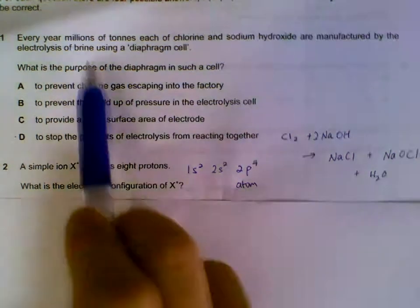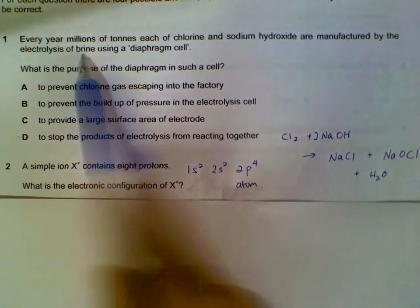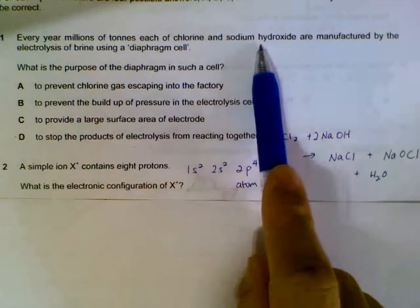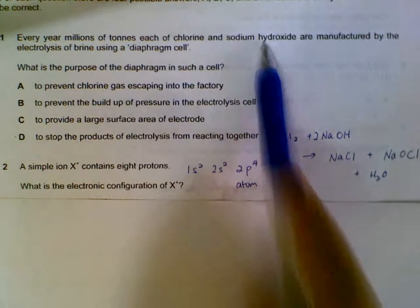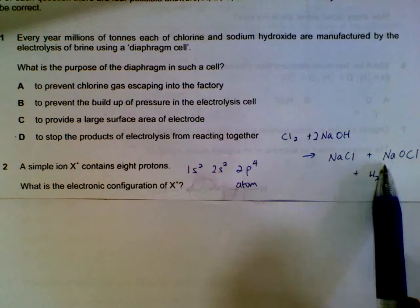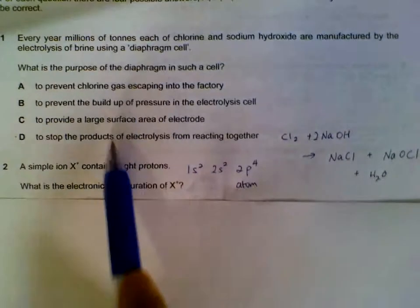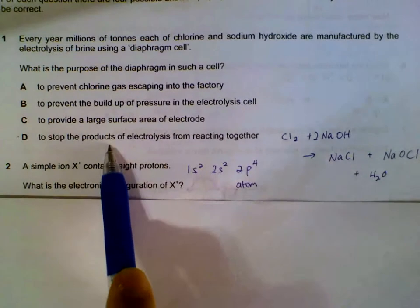Number one, when we electrolyze brine, which is concentrated sodium chloride solution, we get chlorine and sodium hydroxide. These two will react to form NaCl and NaOCl if they mix together. So we need a diaphragm to prevent the products of electrolysis from reacting together.